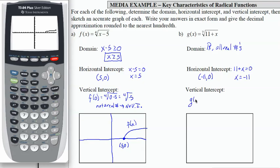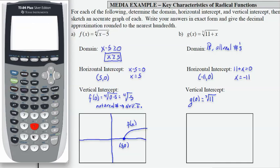To find the vertical intercept, I want to evaluate g of 0. That's going to be the seventh root of 11 plus 0 is 11. So I can compute the seventh root of 11. Let's do that on our calculator. Second quit will take me to the home screen. I need to enter 7, math, and then number 5, and then 11.